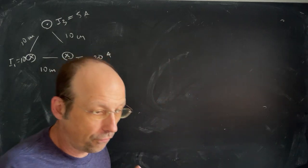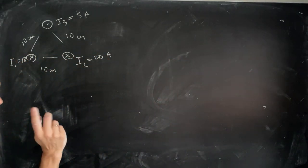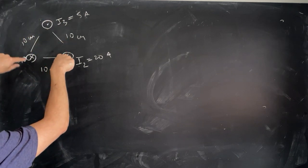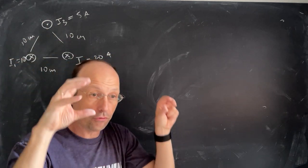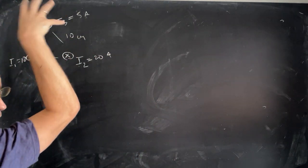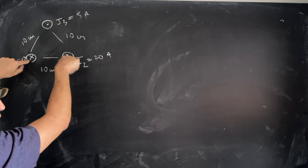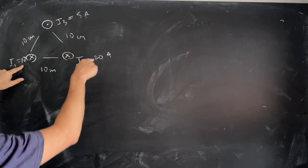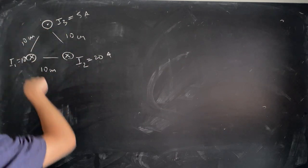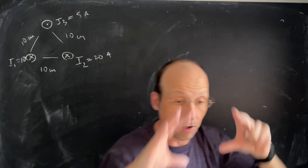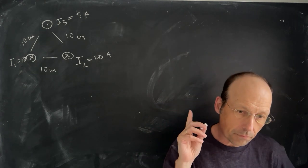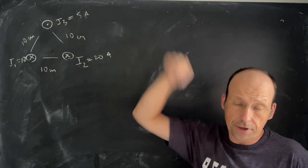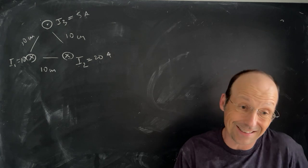Okay so the problem is number 56 from OpenStax Physics. I have three wires and these two wires form an equilateral triangle — they're coming in and out of the paper. These two wires have current going into the board, that one has current coming out of the board: that's 10 amps, 20 amps, 5 amps, and it's a 10-centimeter equilateral triangle. I'm just going to do the top wire.